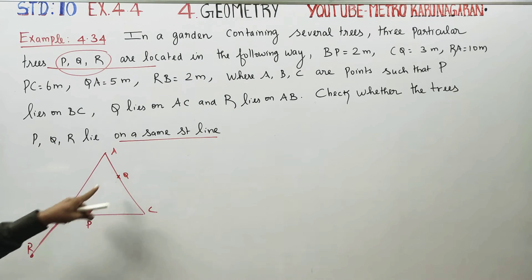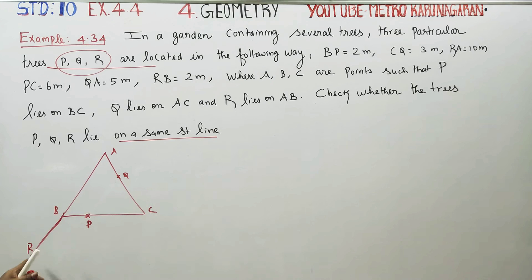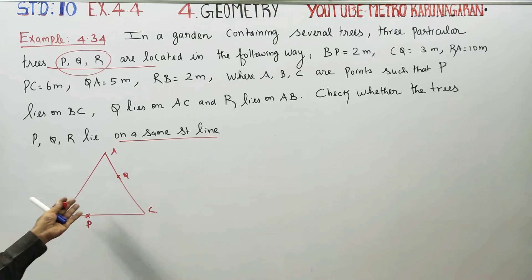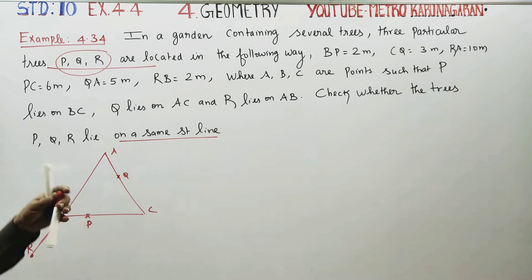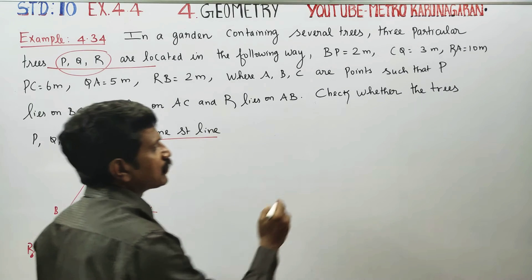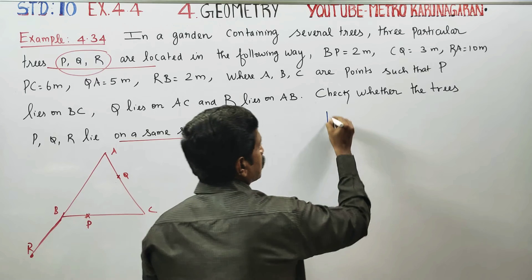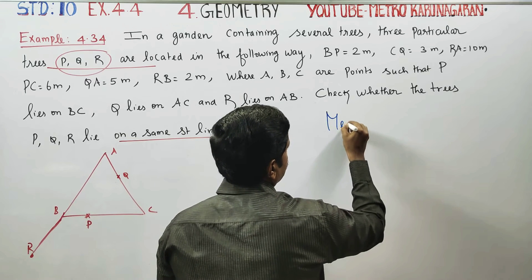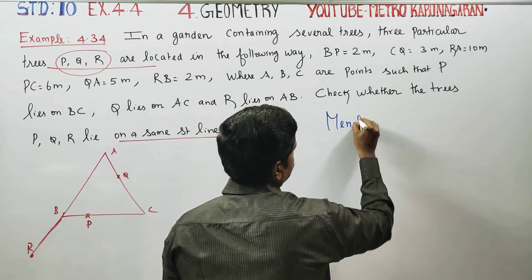P, Q, and R lie on the same straight line. We will start this sum using Menelaus's Theorem. How do we explain Menelaus's Theorem?